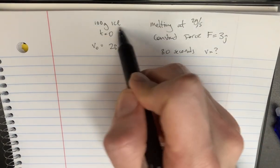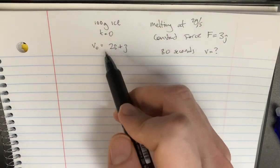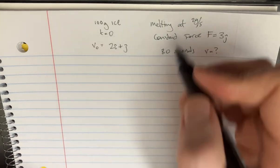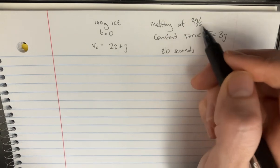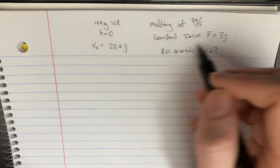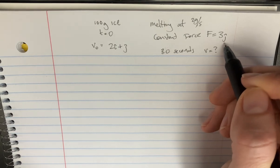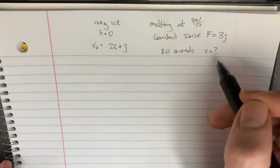So in this problem, I've got a block of ice starting at time equals zero. It's got a velocity of 2i plus j, and it's going to be melting at 2 grams per second for 30 seconds, and during that time it's got a constant force f equals 3j. So we're going to try to figure out what the velocity is after all of this.